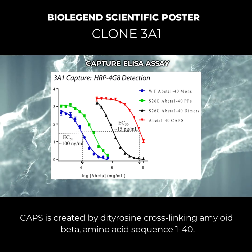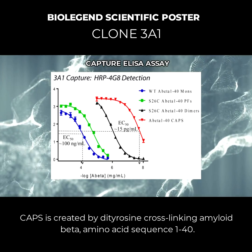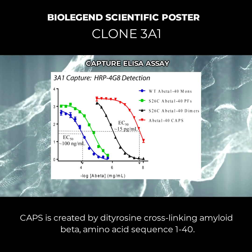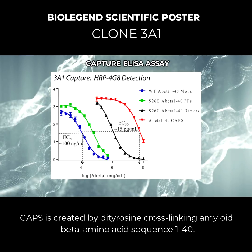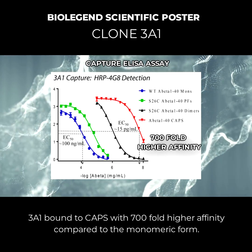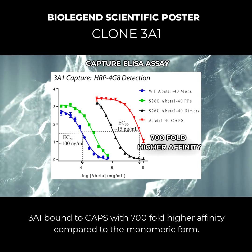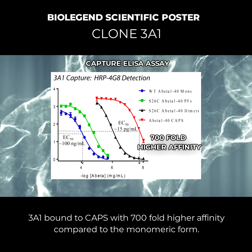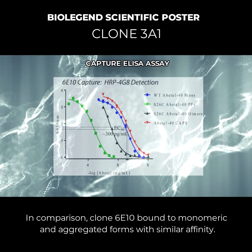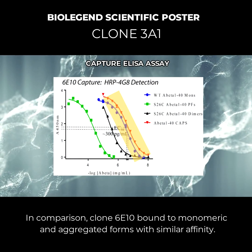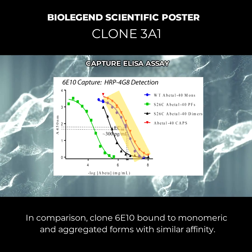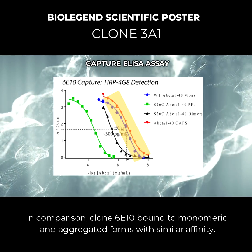CAPS is created by dityrosine cross-linking amyloid beta, amino acid sequence 1 to 40. Clone 3A1 bound to CAPS with 700-fold higher affinity compared to the monomeric form. In comparison, clone 6E10 bound to monomeric and aggregated forms with similar affinity.